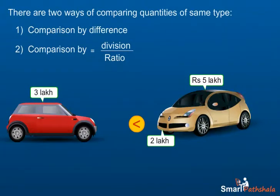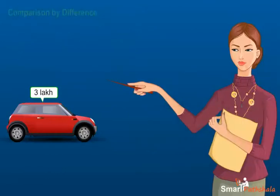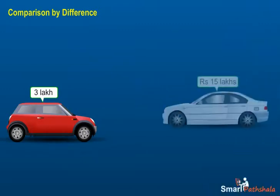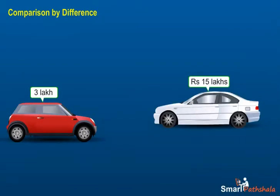This type of comparison where comparison between two quantities is done by finding difference is called comparison by difference. The cost of car C is rupees fifteen lakhs. We can compare the cost of cars and say car C is five times costlier.